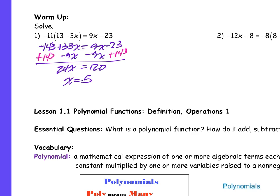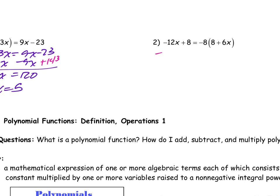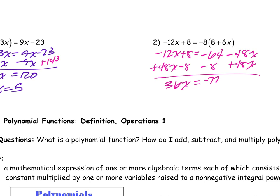And the second one, beautiful. 36x equals negative 72, so x equals negative 2. Any questions? I'm hoping you guys can do those.